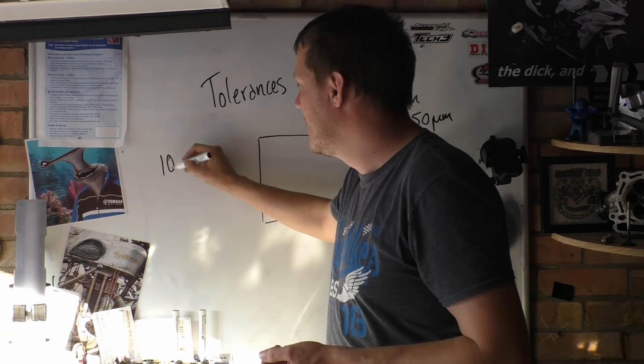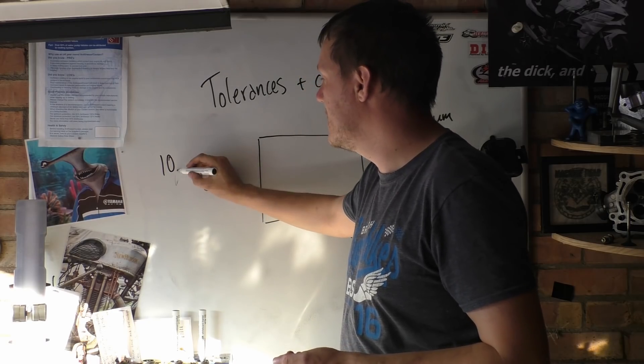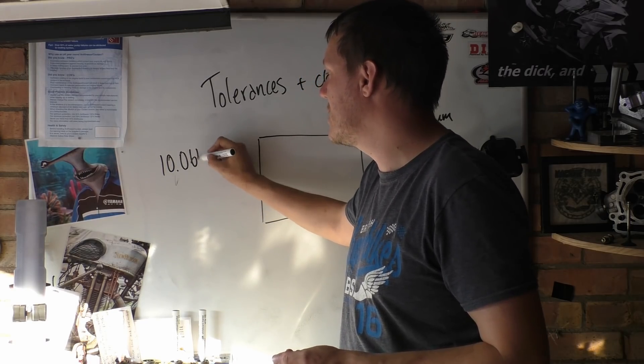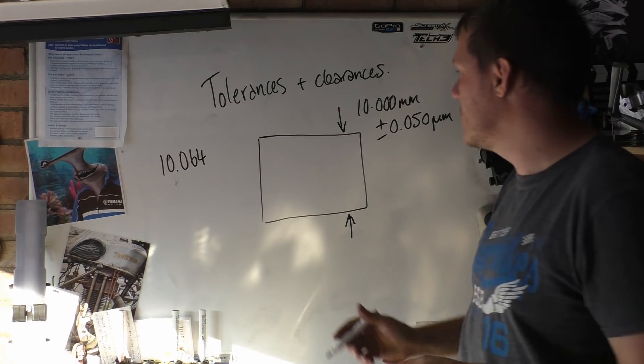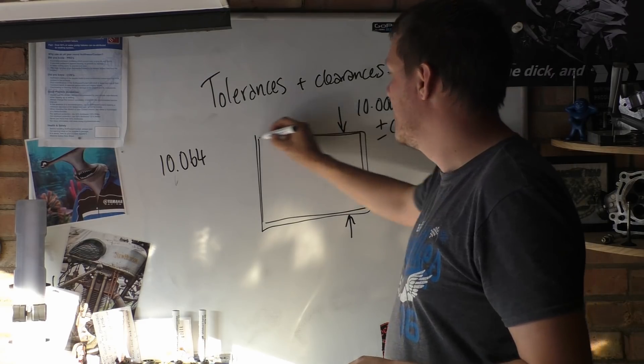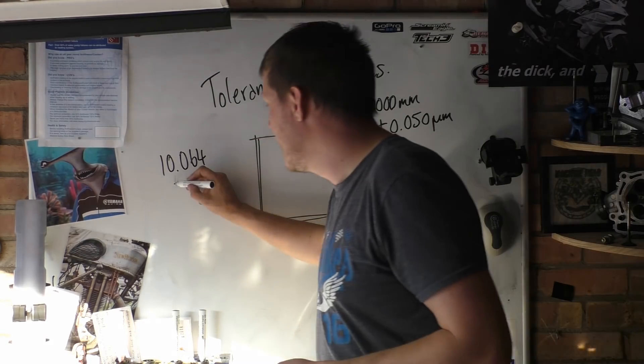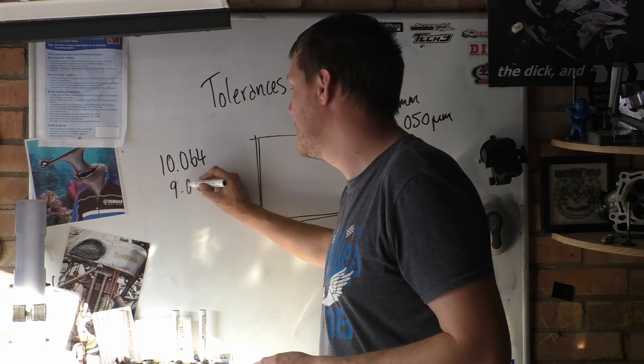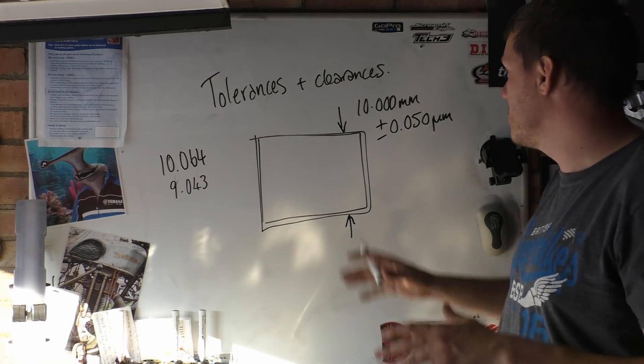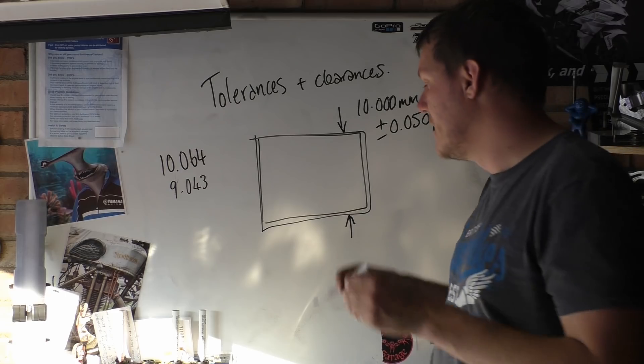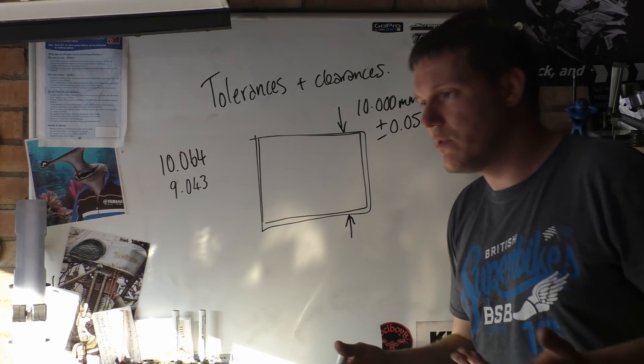When we get something like this, and it comes in at 10 points, idiot, 10.064, like that, that is out of tolerance. This is too big. Same, it can work the other way. If this turns out to be 9.043, that is well out of tolerance. We are fucking miles off from where we want to be.